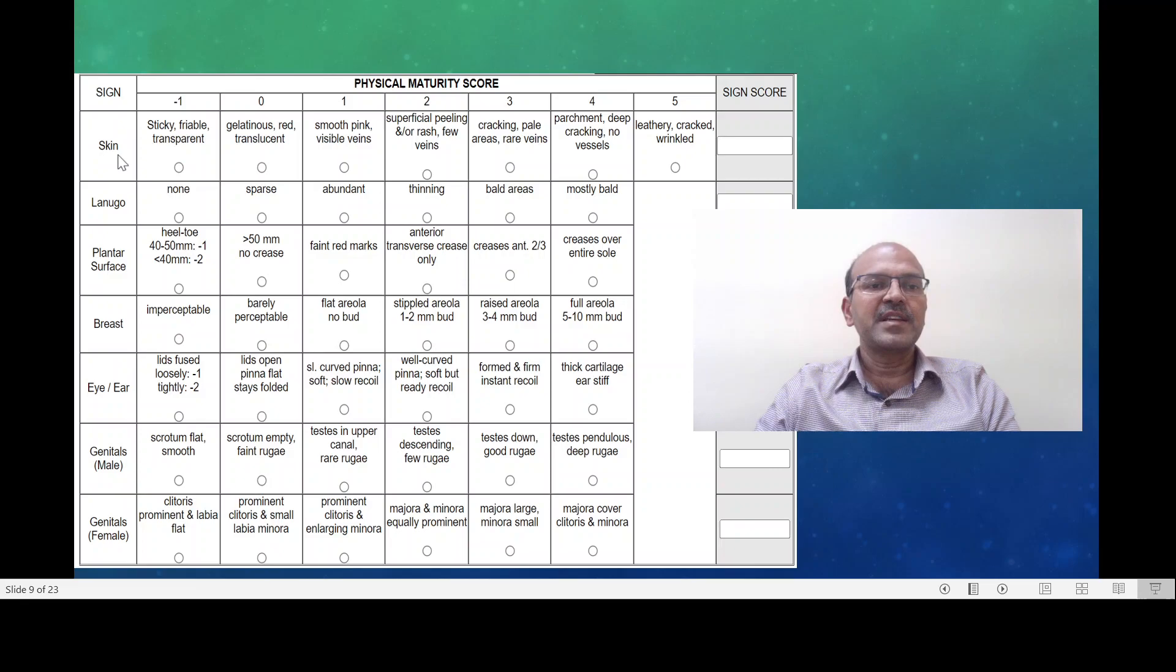You have skin related changes, very sticky, friable, transparent skin, gelatinous, red translucent, smooth with pink visible veins, superficial peeling, cracking pale areas. So presence or absence of lanugo hair.